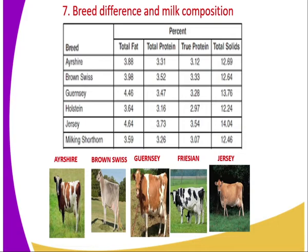For Brown Swiss it is 3.99%; for Jersey that is 4.46%, which is actually the second highest fat content. Friesian is 3.64%, and Jersey is 4.64% — Jersey is the one with the highest butterfat content. The same applies to protein; you can see in this table that different breeds contain different levels of protein and minerals found in the milk. Breed differences is therefore a factor that determines milk composition.